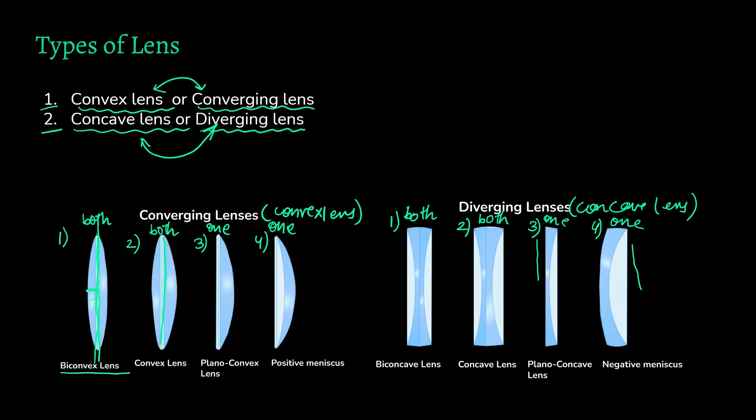Now that I have explained it, you would be able to see that in the biconvex lens, the central axis divides the lens into two equal halves. But in the case of a convex lens, the distance of the central axis from both the spherical surfaces is not the same. So the difference is: in a biconvex lens the axis divides it into two equal parts, while in a convex lens the two sides can have different radii.